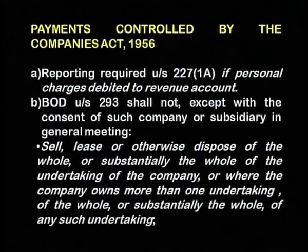There are few expenditures or payments which are controlled by the Companies Act 1956. There is a reporting requirement under Section 227 if personal charges are debited to the revenue account. Only expenditures of a business nature incurred for the entity should be debited to the P&L account. No personal expenditure incurred either for the directors or their employees should be entered in the P&L account.